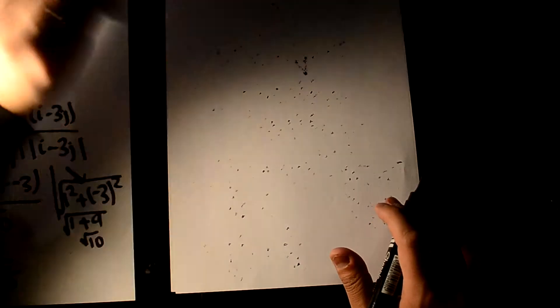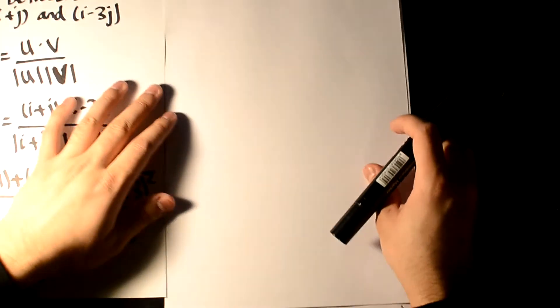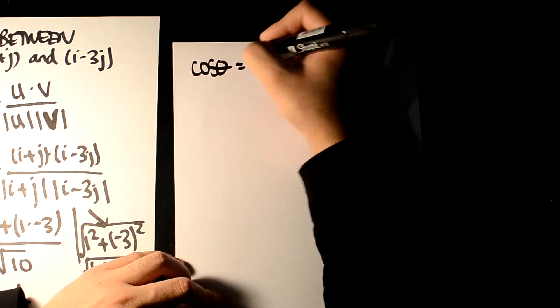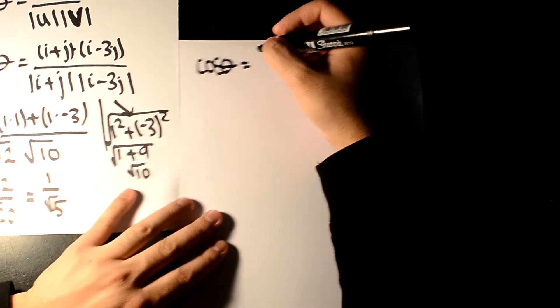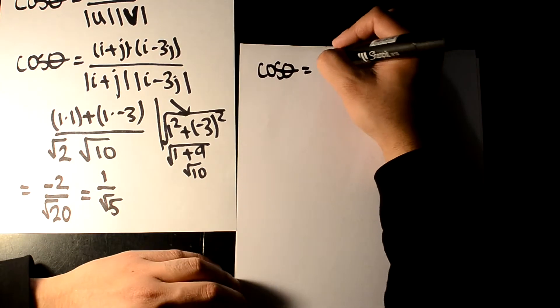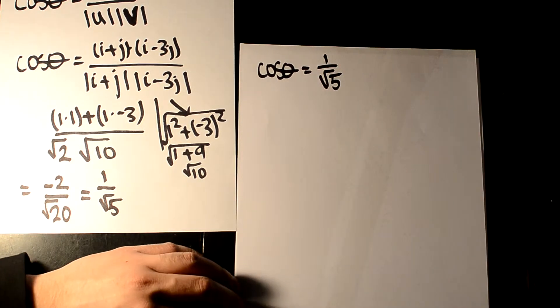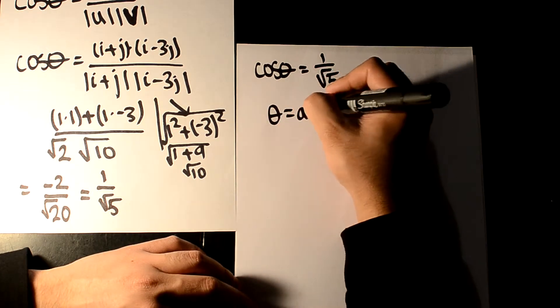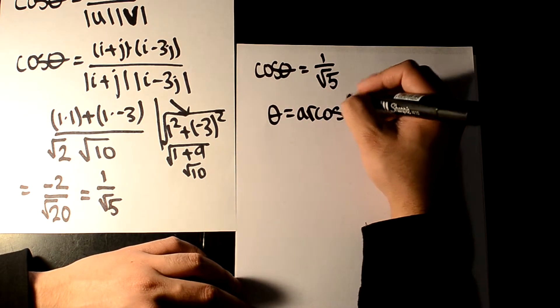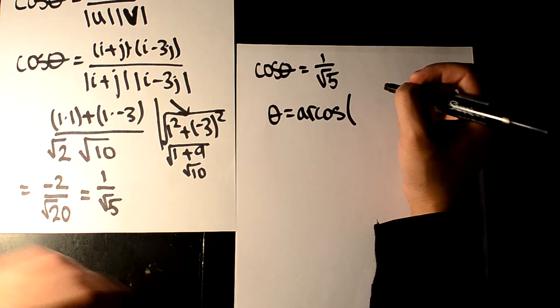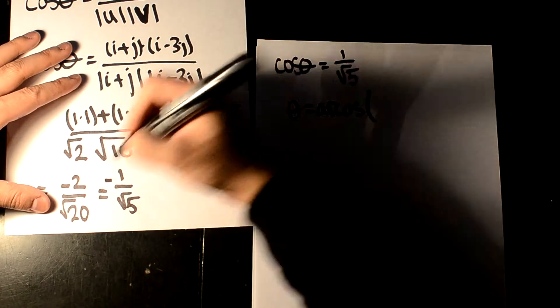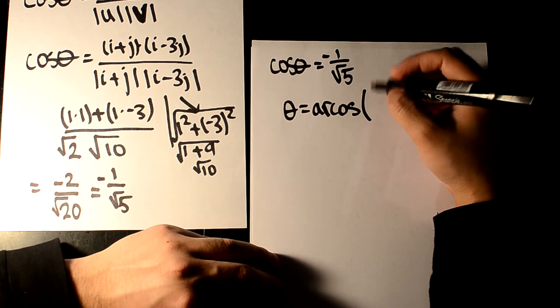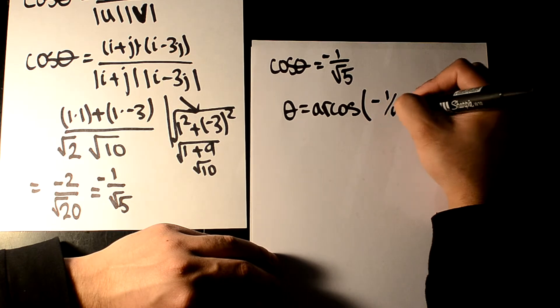So now the next step that we're going to take is we know that cos theta equals minus 1 over root 5. Now this is basic GCSE, where you see your theta is going to equal your arccos. Oh, sorry, I missed the minus here. There we go, that would have been cheeky. Yep, minus, minus, minus. So minus 1 over root 5.